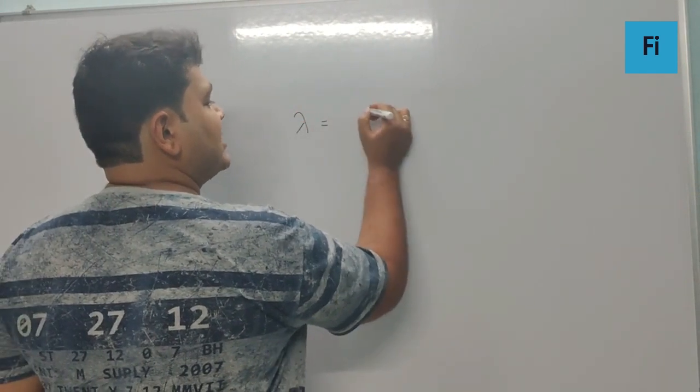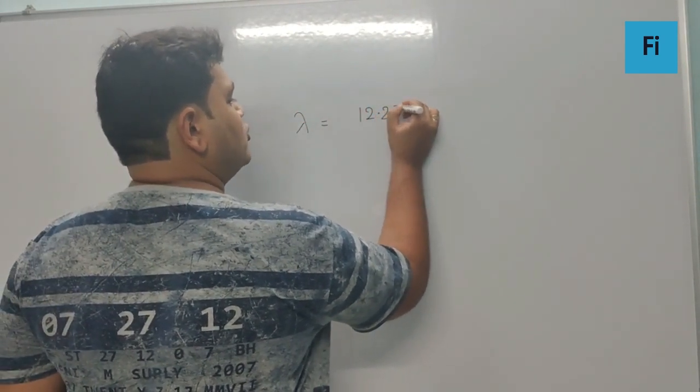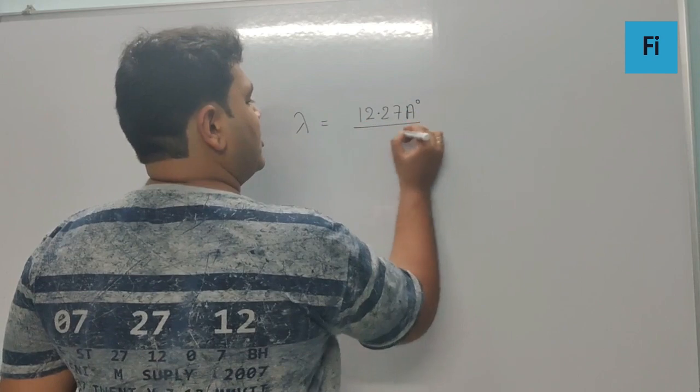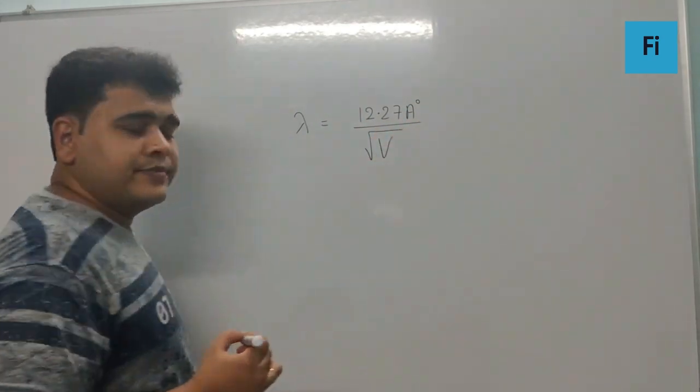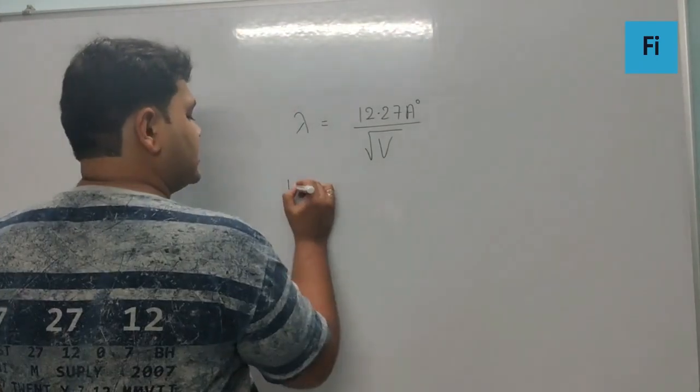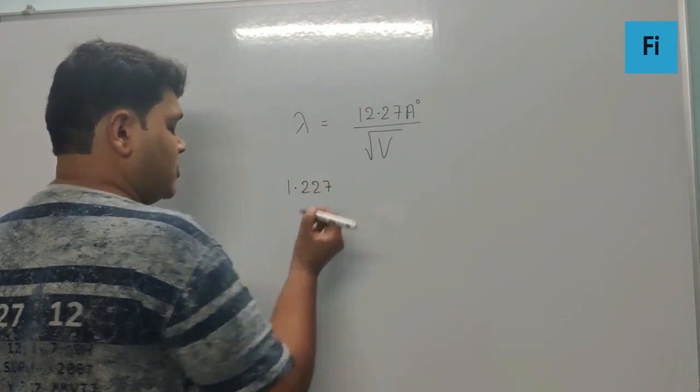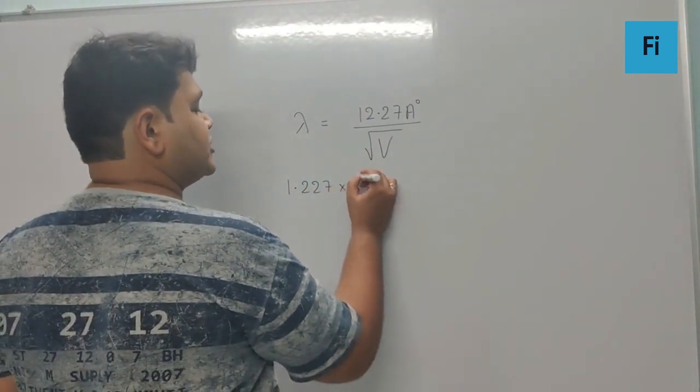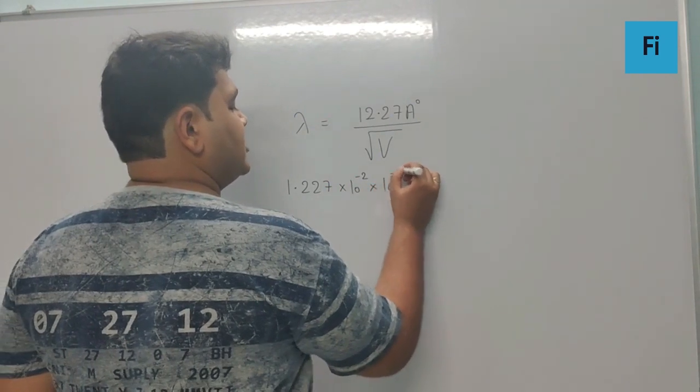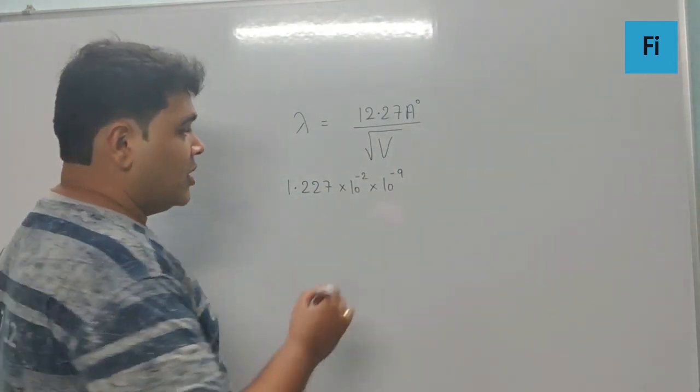Now guys, we know the formula for de Broglie wavelength as 12.27 angstrom by root of V. So can I write this as 1.227 into 10 raised to minus 2 nanometer? Instead, this is 10 raised to minus 9.